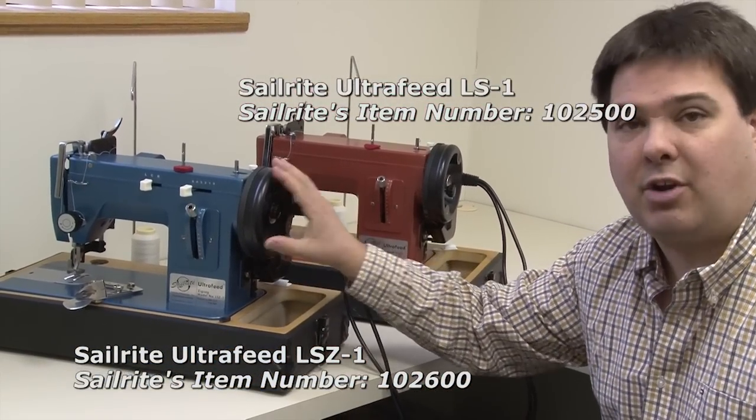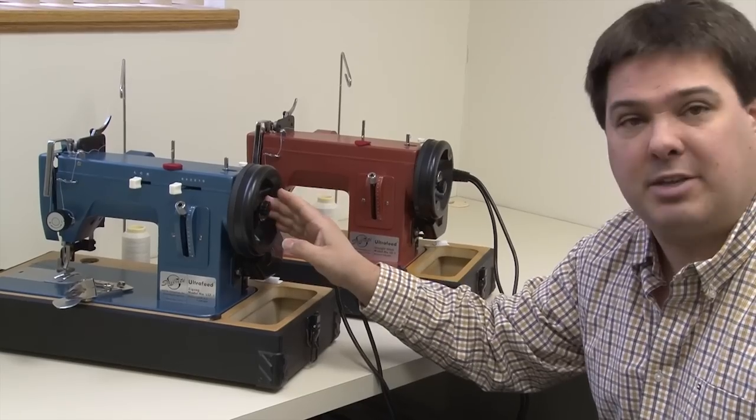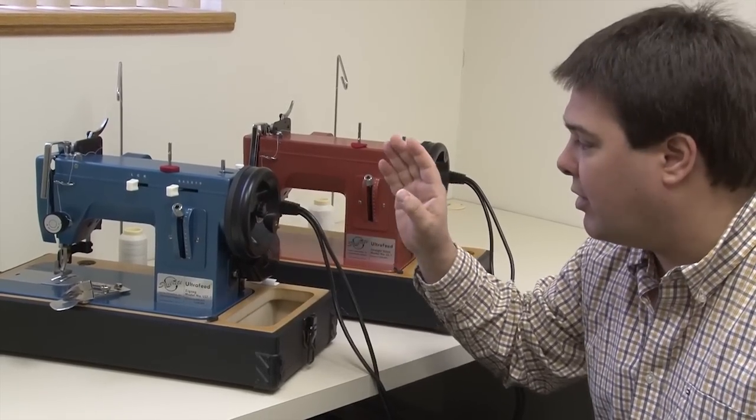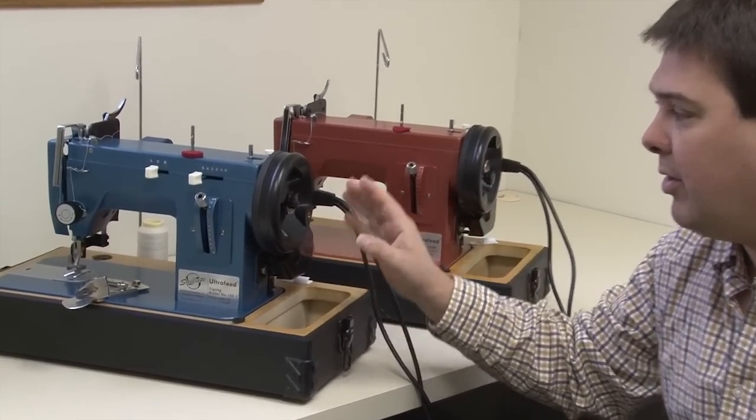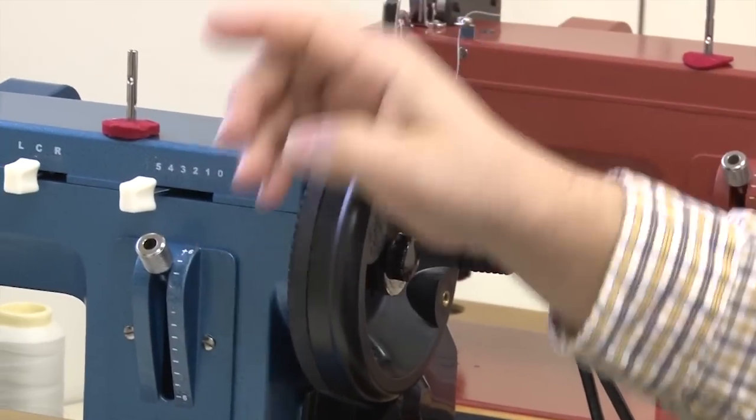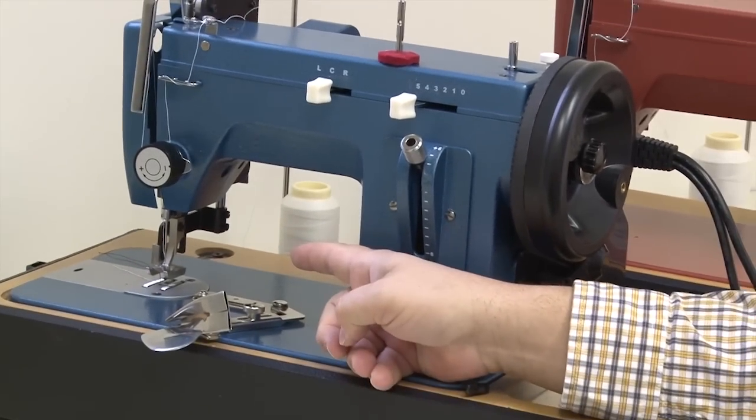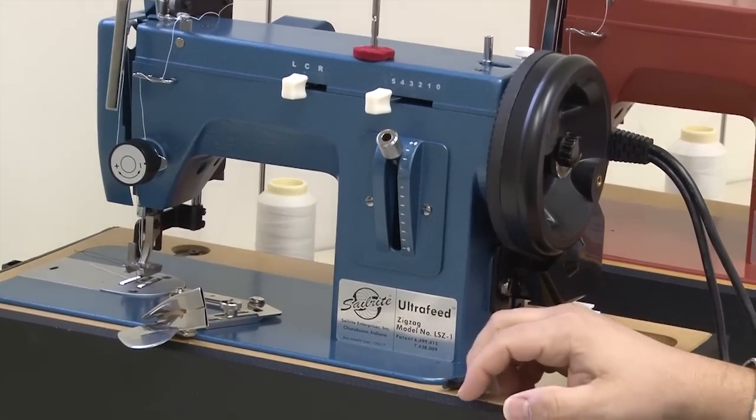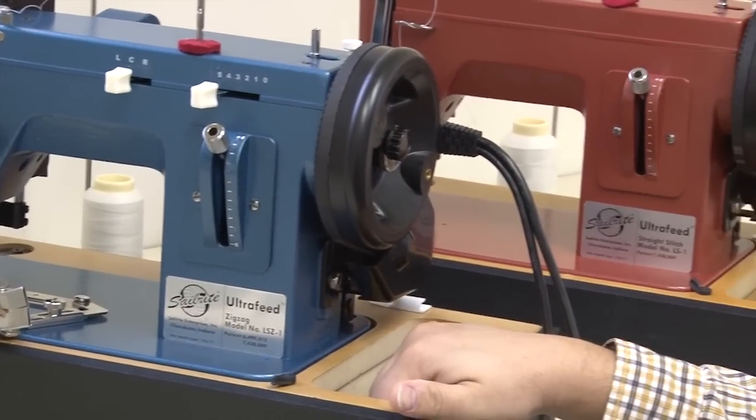These flywheels are fantastic with the posi pin clutching system. You've got direct power from the motor to the flywheel all the way through the upper shaft and then transferring into the needle's penetration through the fabric. So we have phenomenal power with this system.